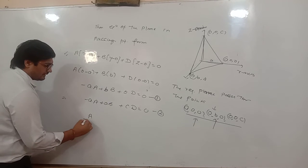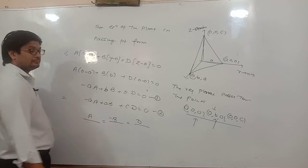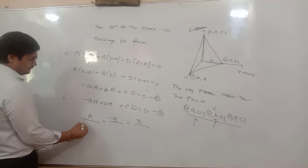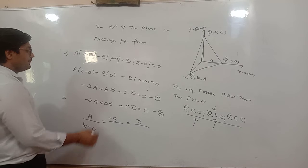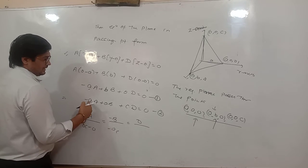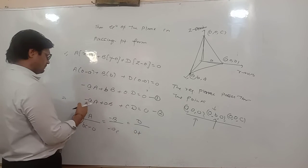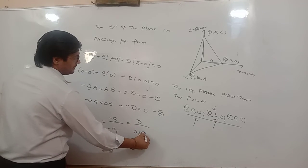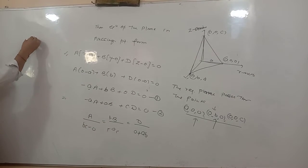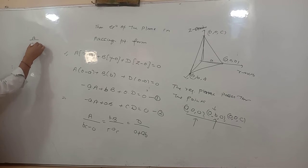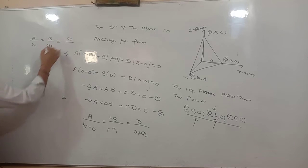Put this point into the equation: X की जगह 0 रखेंगे, so minus A into A; in place of Y again 0, so plus 0 into B; and Z की जगह C रखा, so C into D equals 0. These two equations आए — इन दोनों equations को solve करेंगे। Minus A into C, and solving further: A upon BC equals B upon AC equals D upon AB.